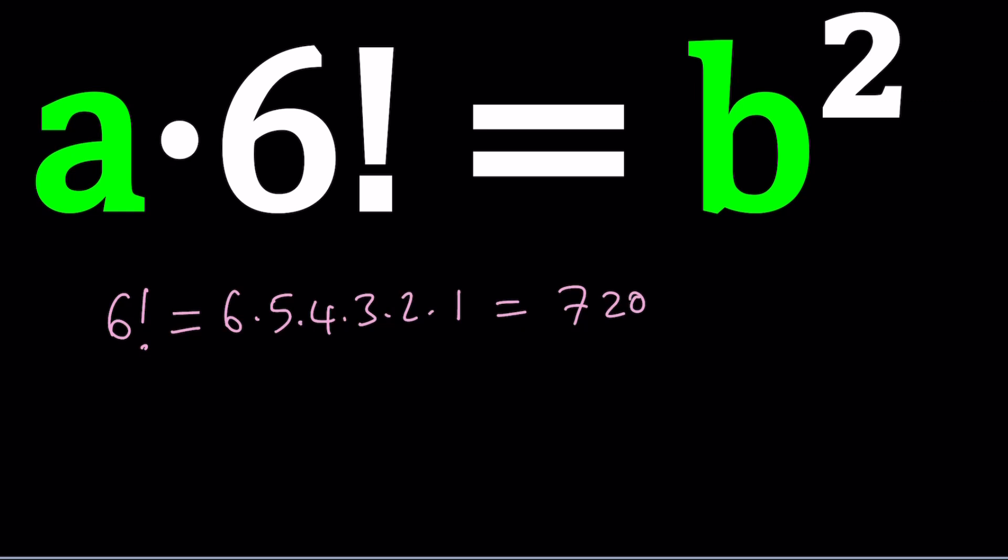Or if you already knew that 4 factorial is 24, you can go off of that. 5 times that is 120, which is 5 factorial, and so on and so forth. No matter how you do it, you're going to end up getting 720 for 6 factorial. And you may even know 7 factorial is 5040. So what do you do with this? Well, we're going to do the prime factorization.